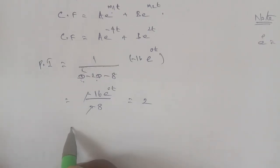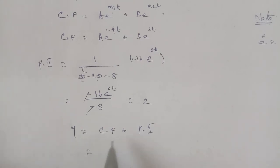The general solution is p equals complementary function plus PI. So p equals A e^(-4t) plus B e^(2t) plus 2. This is the answer. Thank you.